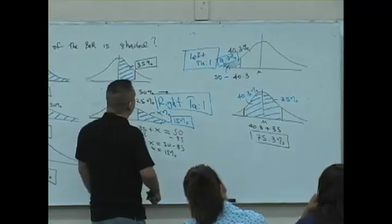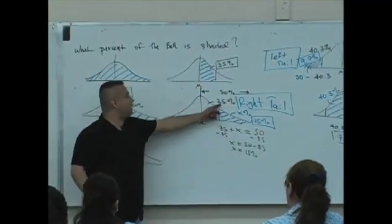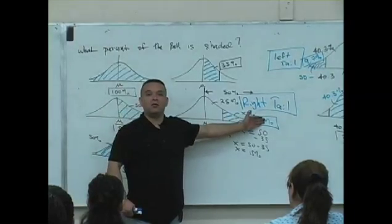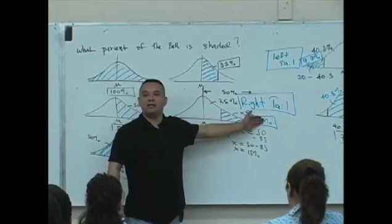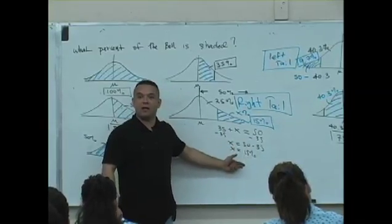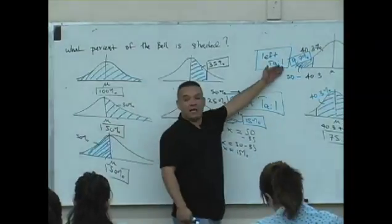And then you go, well, what do you mean? Well, if this is 35 percent, the whole thing is 50, you do what Yowsey did. She deduced the answer. 50 minus the 35. You see what I'm saying? If it's a left tail, same thing.